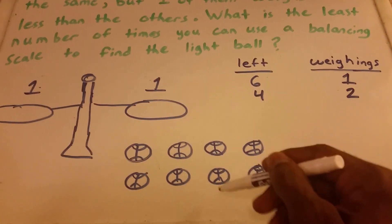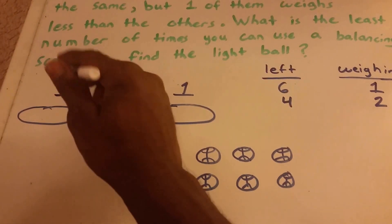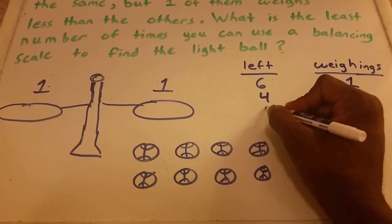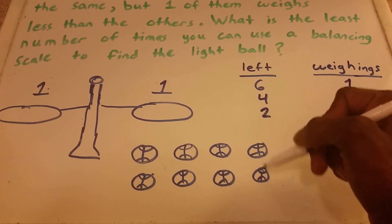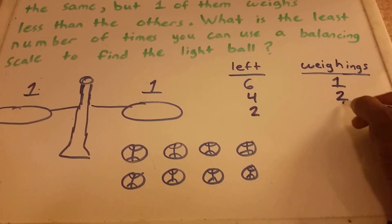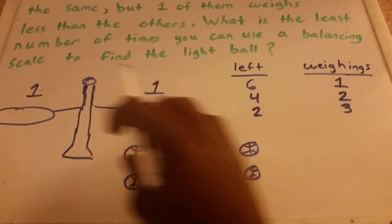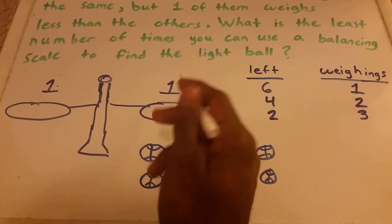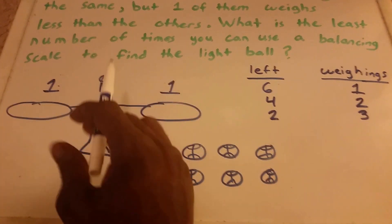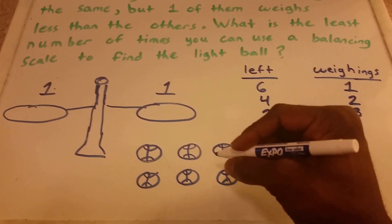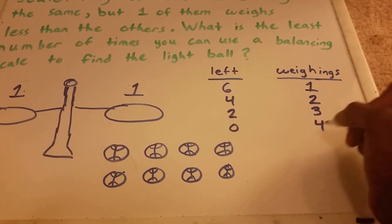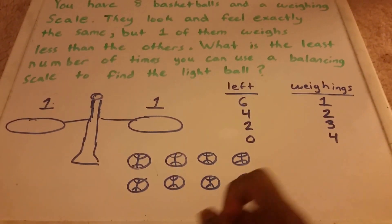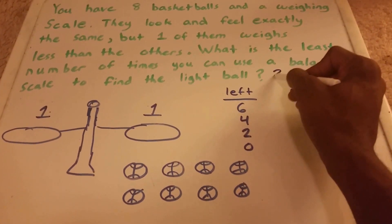We're going to do the same thing again — pick two balls, put one on each side. They weigh the same, so we have two balls left. That was our third weighing. Now we take these last two balls, put one on each side, and one of them weighs less than the other — zero balls left. That was our fourth weighing. So that's one method, but it doesn't give us that number two.